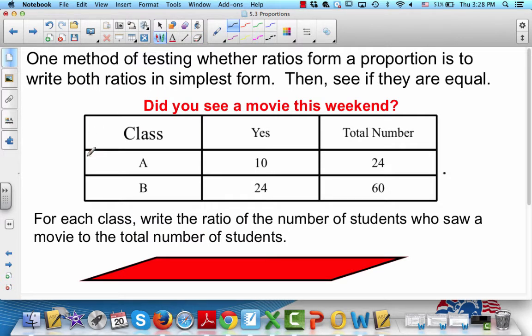One method of testing whether ratios form a proportion is to write both ratios in simplest form, then see if they're equal. So let's look at this one. Did you see a movie this weekend? Class A, 10 people said yes, 24 people were in the class. So for each class, write the ratio of the number of students who saw the movie to the total number of students.